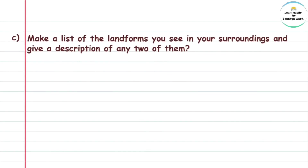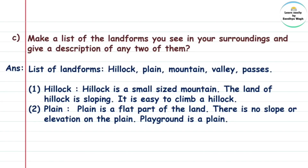C: Make a list of the landforms you see in your surroundings and give a description of any two of them. A hillock is a small-sized mountain — hillock means tekdi. The land of a hillock is sloping and it is easy to climb. A plane is a flat part of the land — there is no slope or elevation on a plane. A playground is an example of a plane.